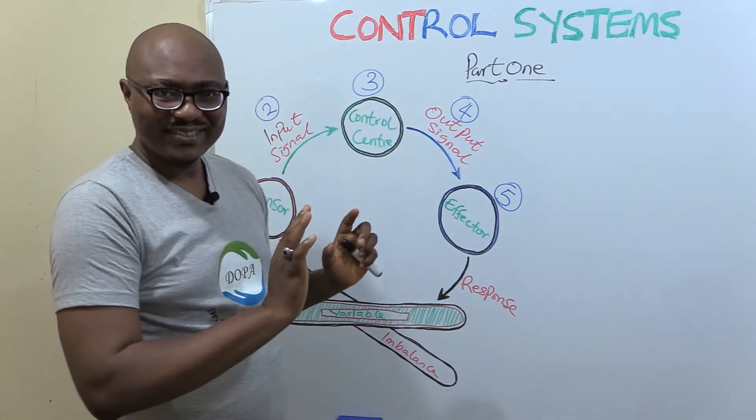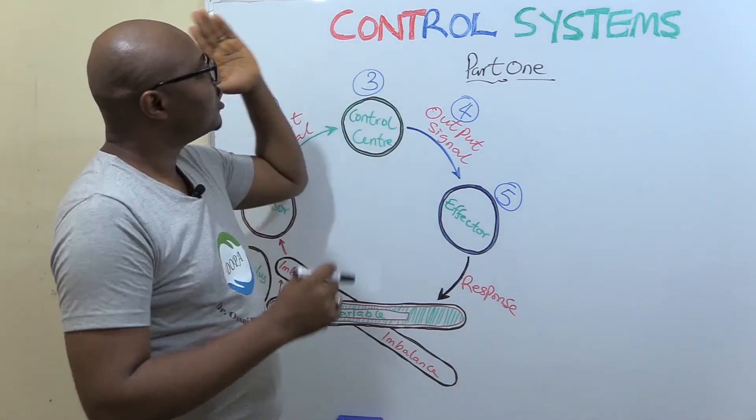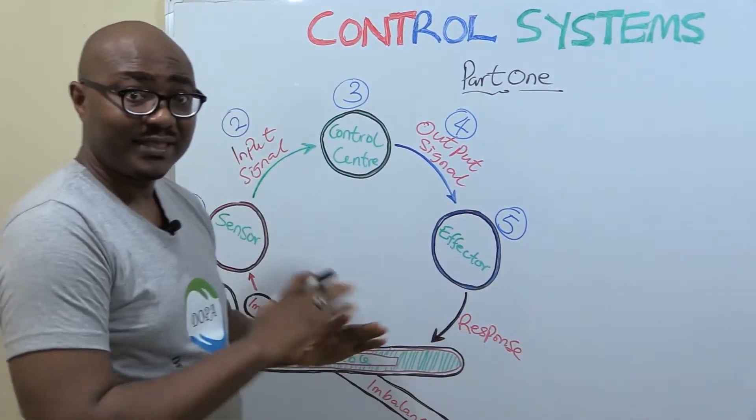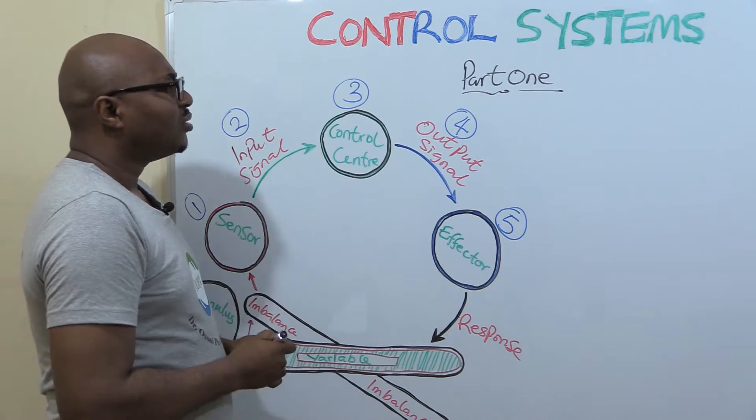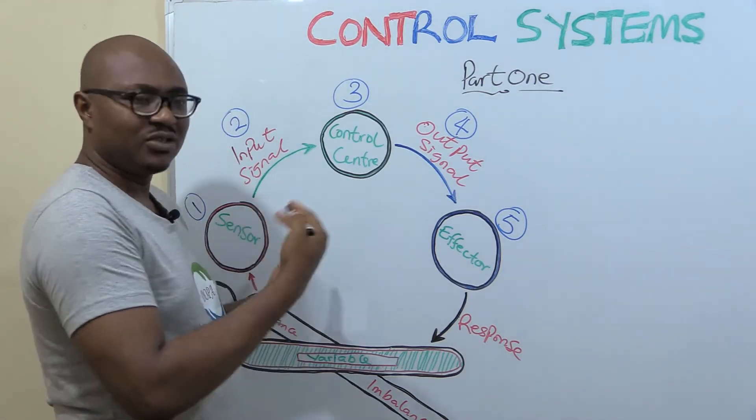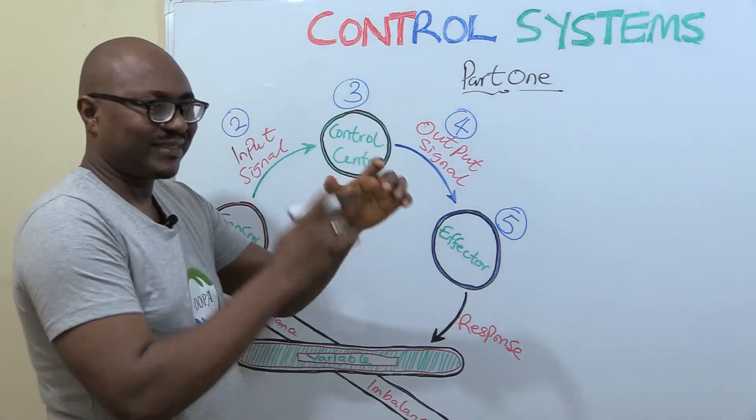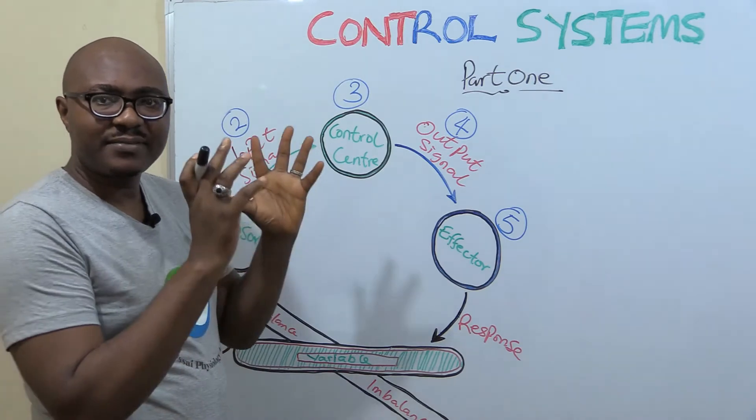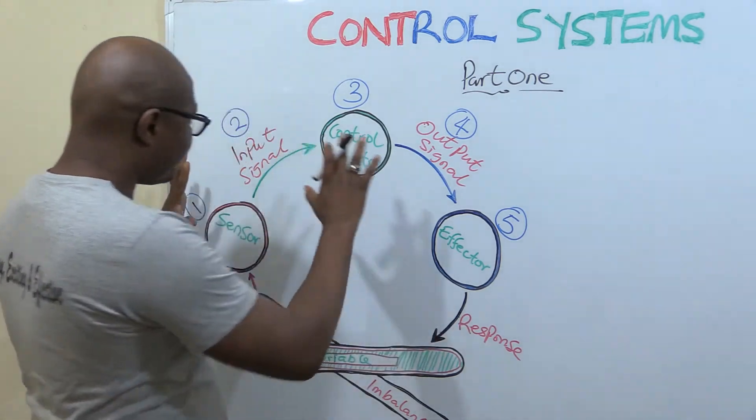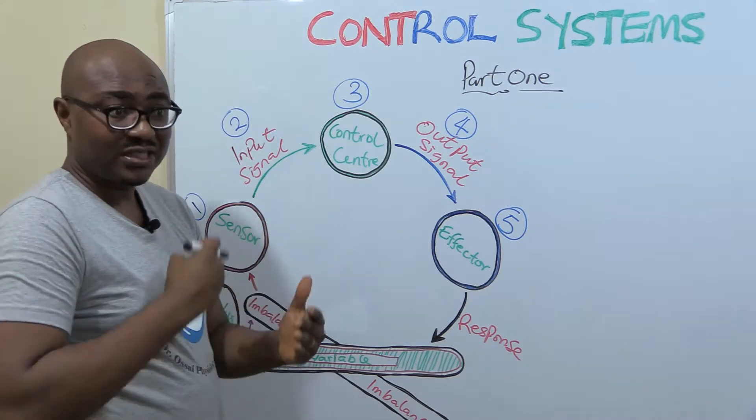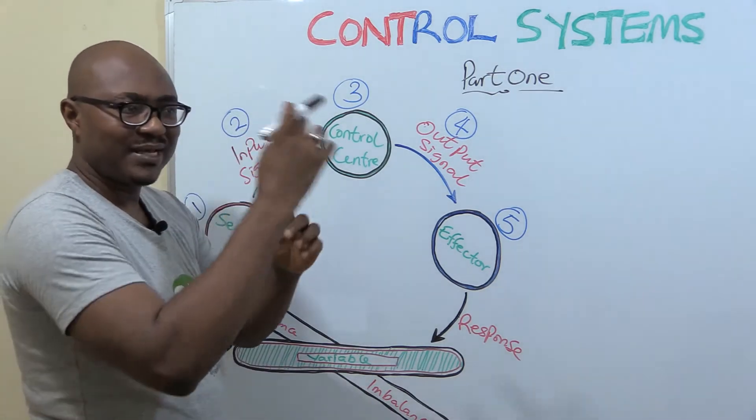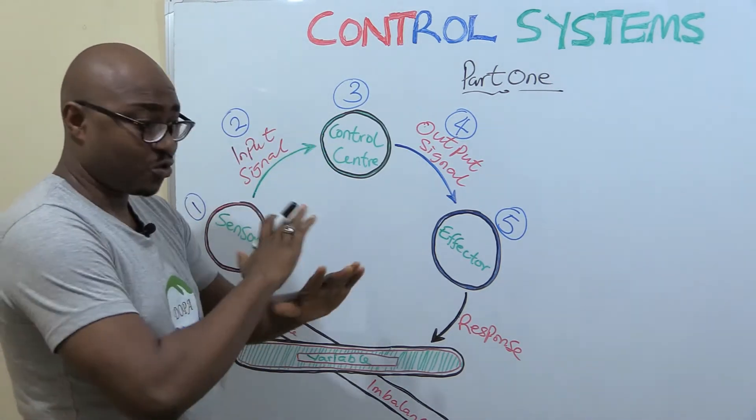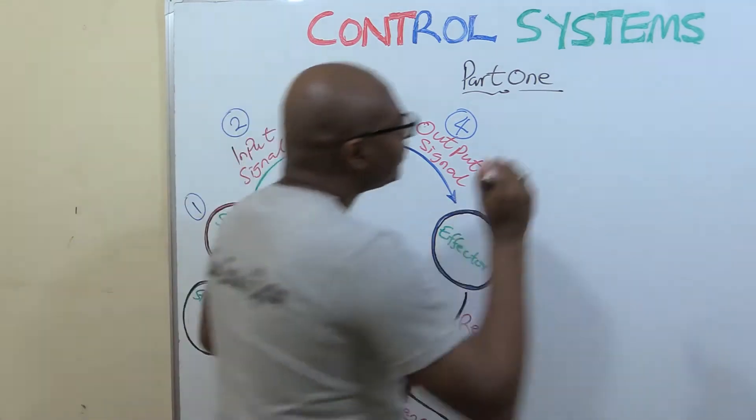Now control system is what the body uses to achieve homeostasis stability. How does the body really do this? We're going to be looking at those components that are common to different kinds of control systems. We're going to look at the components, the sequence, and the unique role those components play. This will help enlighten you because that's the basis of physiology - control systems. Let's start with number one.